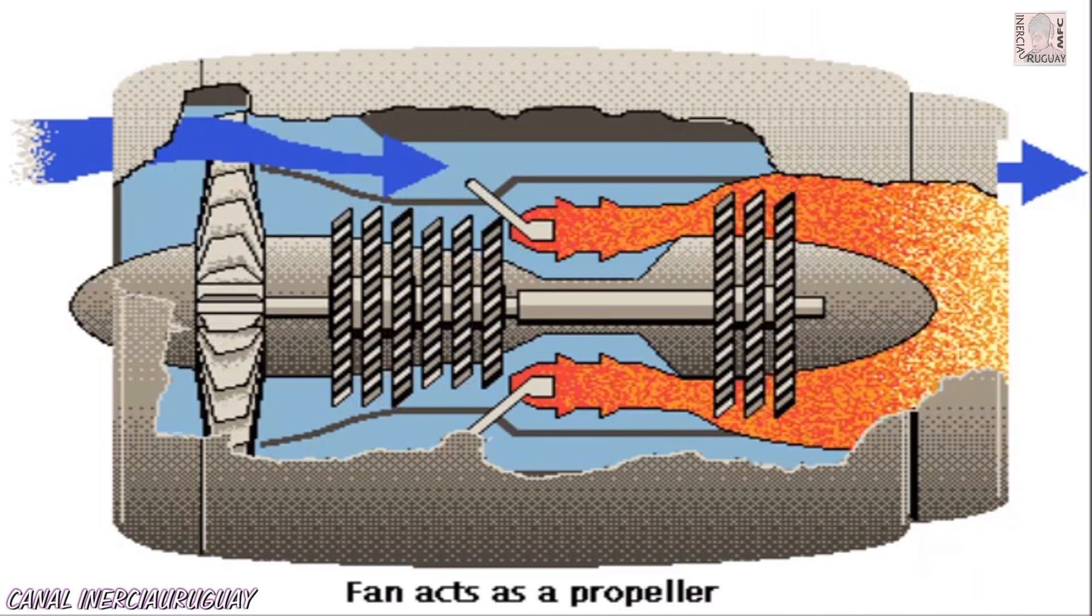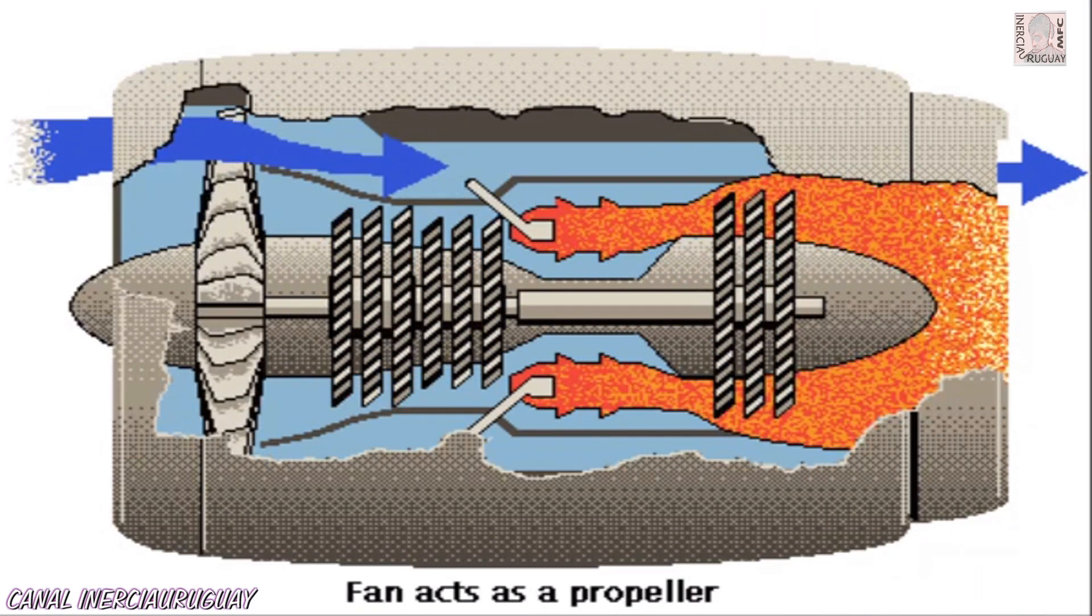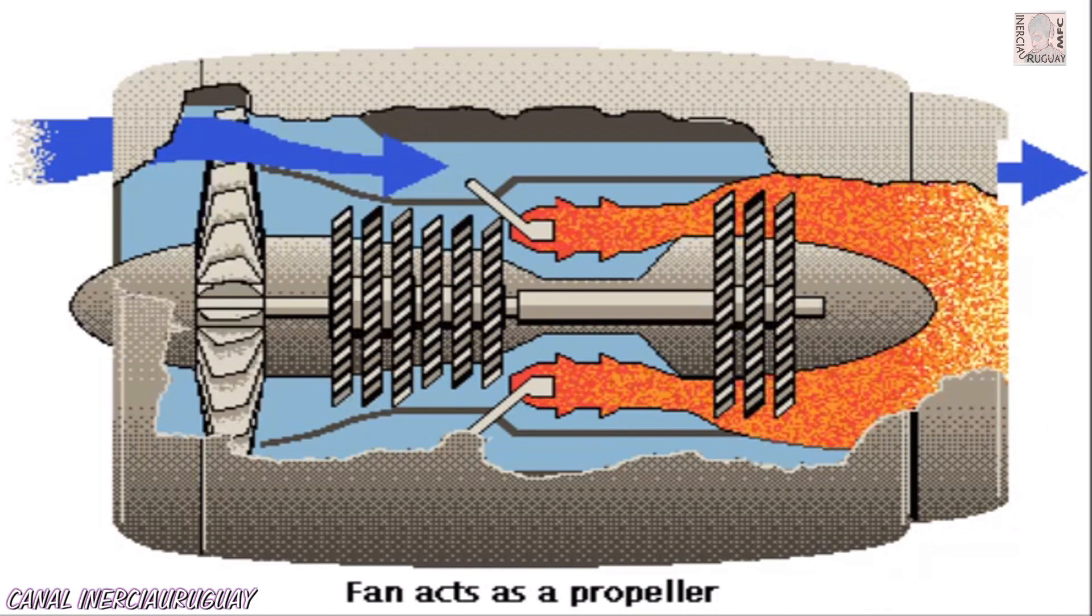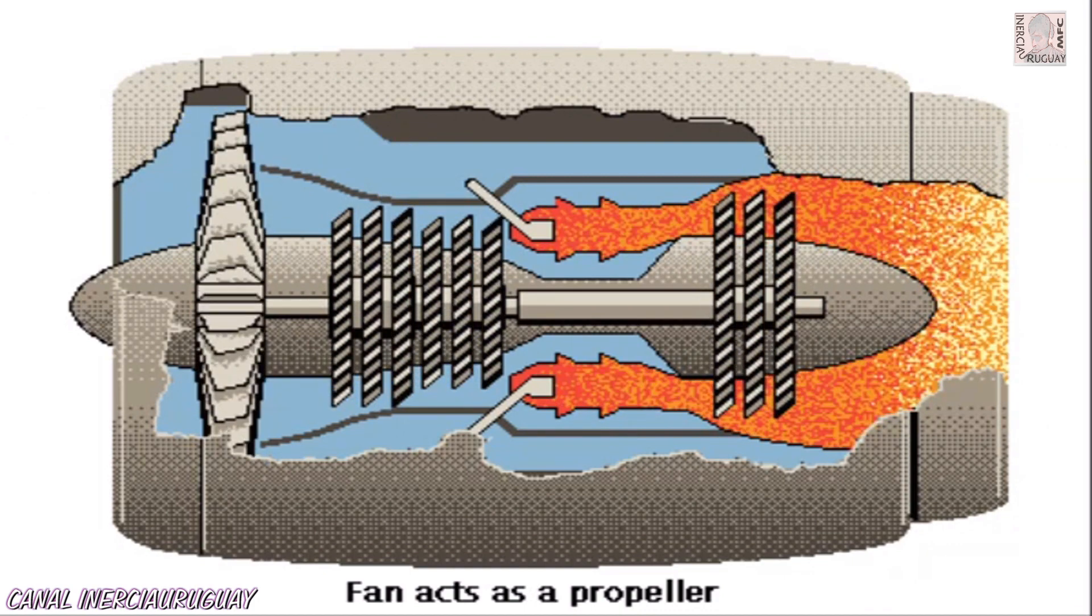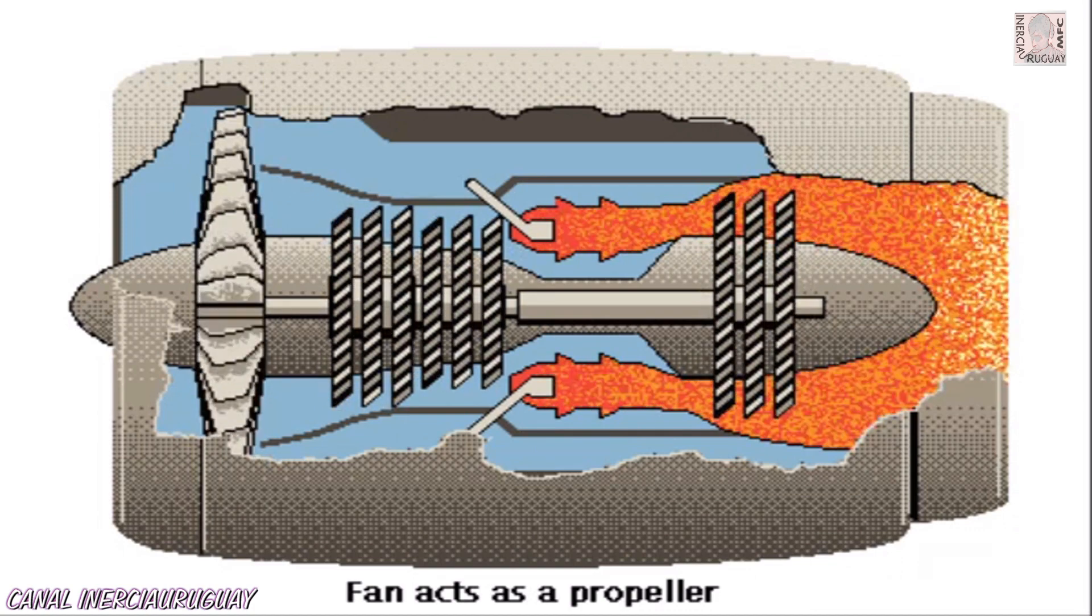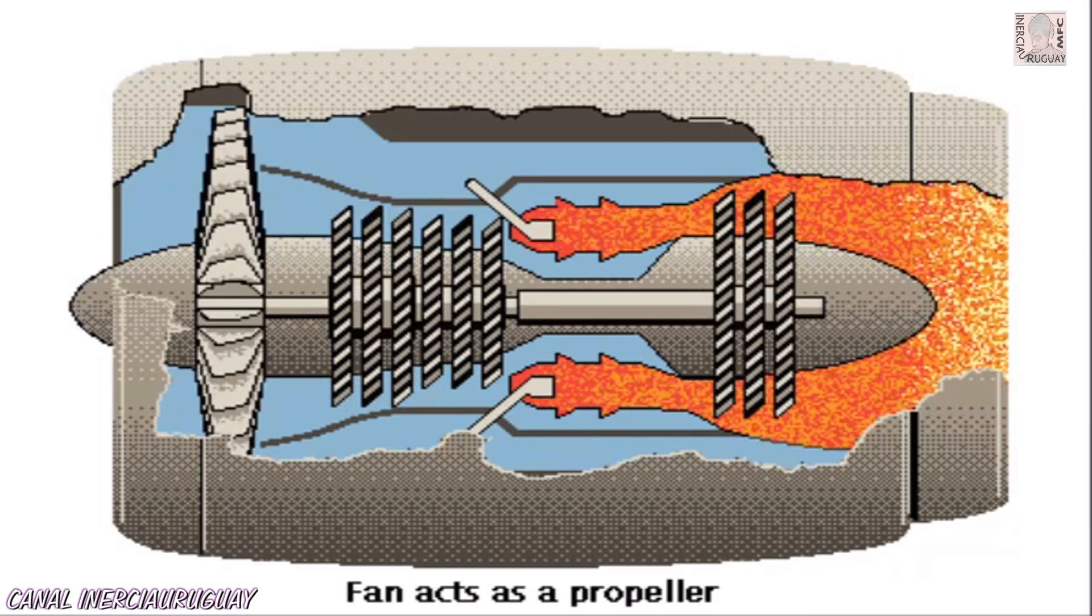Most of the air drawn in by the fan bypasses the engine. This compressed air pushes forward on the blades of the fan. In this way, the fan acts as a propeller providing forward thrust.